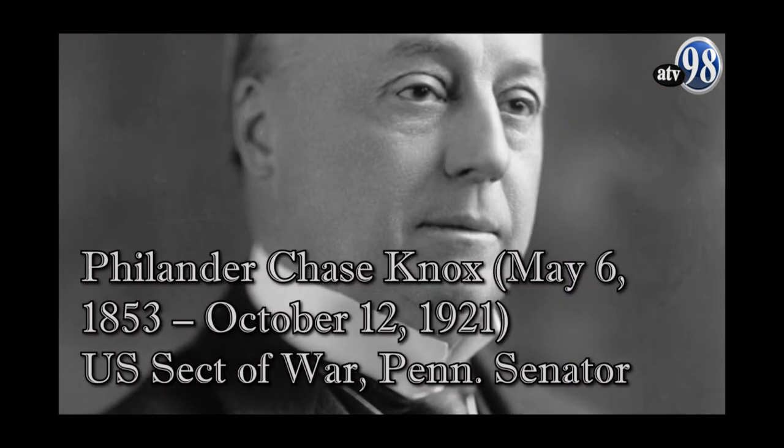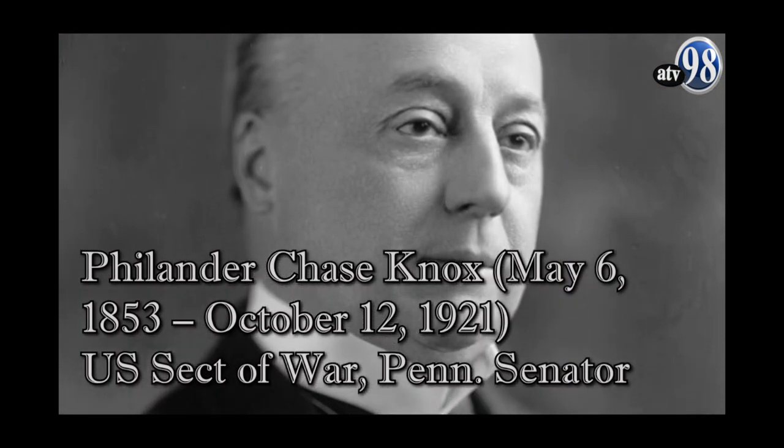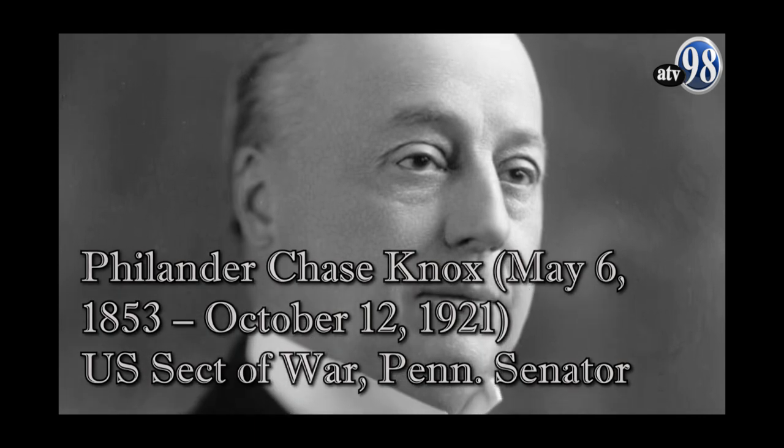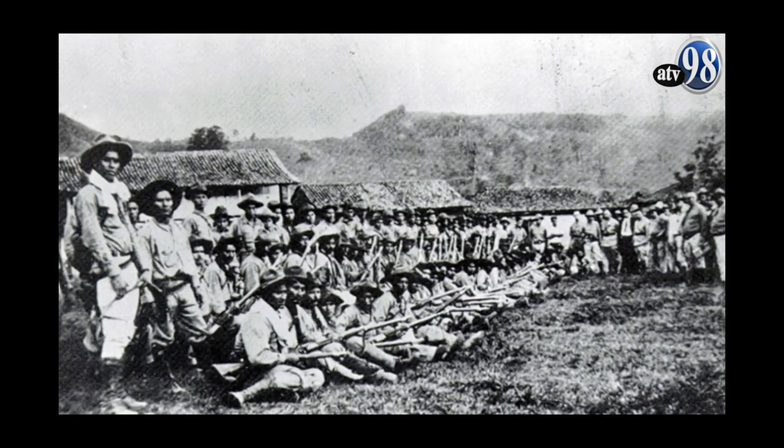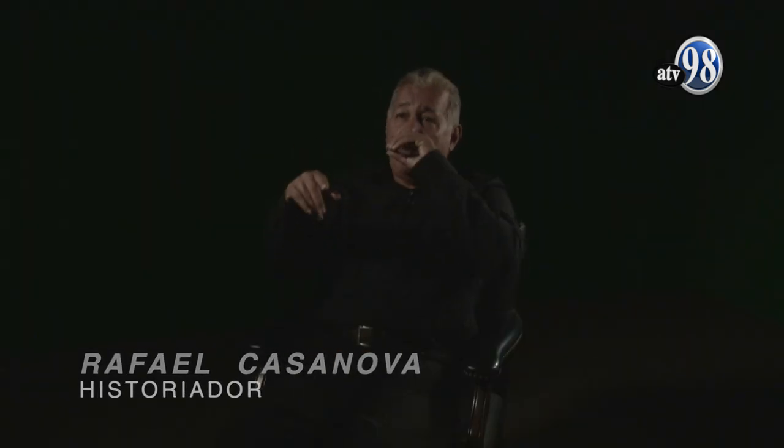Dentro de esta lógica, en 1910, una vez caído el gobierno de Madrid, asumió como presidente el general Juan José Estrada, quien había sido disidente liberal de Zelaya, o como le llamaron los liberales, traidor a la revolución liberal. El vicepresidente fue Adolfo Díaz, del partido conservador. Este gobierno era provisional, en tanto se convocaban elecciones. El gabinete era mixto, pero con predominio conservador.